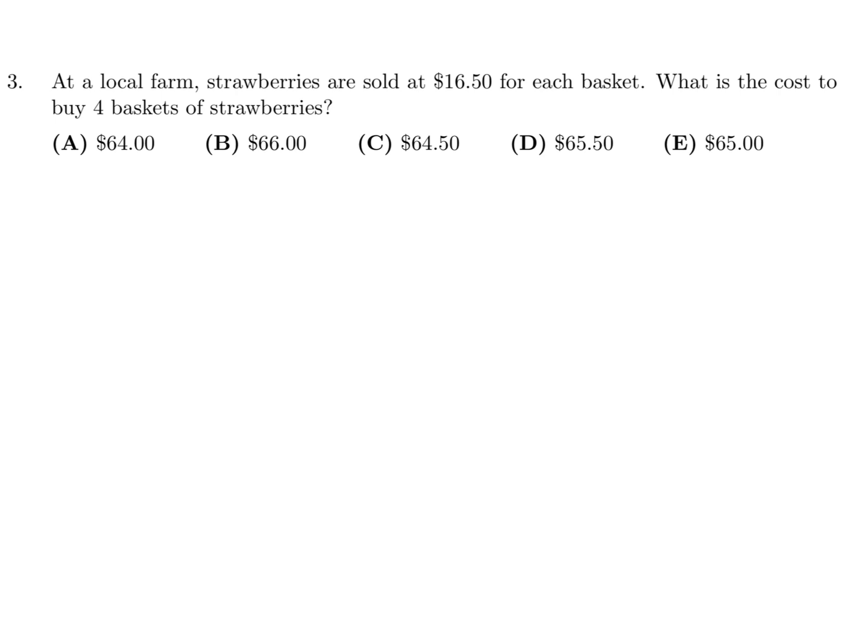At a local farm, strawberries are sold at $16.50 for each basket. What is the total cost to buy 4 baskets? So we do 4 times that $16.50, and that comes out to $66. So that's going to be for number 3, B.